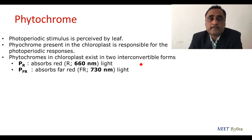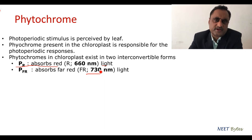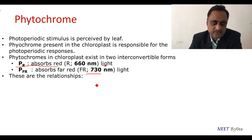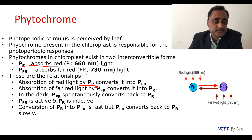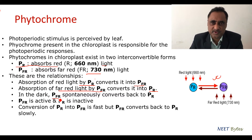The photoperiodic responses are actually mediated by phytochrome. Phytochrome can be found within the leaf, specifically within the chloroplast. There are various forms of phytochrome, but at this level we will concentrate on two forms: PR and PFR. Both these forms are interconvertible. PR absorbs red light, and PFR absorbs far-red light. There is a certain relationship between them that is very important for understanding photoperiodic responses.